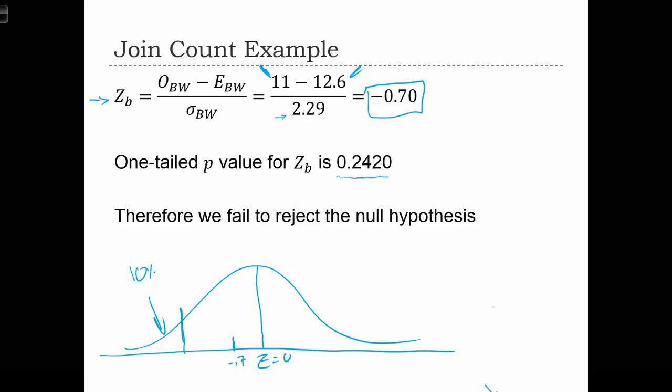We can use Excel or the table of probabilities to determine that the area to the left of this test statistic, so this area in here is equal to 0.24 or equal to 24.2%.